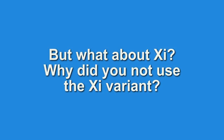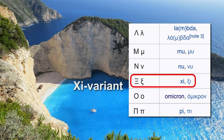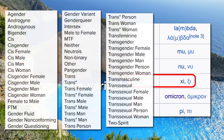But what about Xi? Why did you not use the Xi variant? As you've obviously noticed, in the Greek alphabet after Nu comes Xi. But after speaking with some Chinese speakers, Xi sounds too much like the English word Xi. We thought that might cause too much confusion and unfairly target females. We didn't want people to think that the new variant only targets one gender — it actually targets all 58 genders officially recognised by the UN.